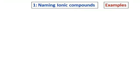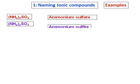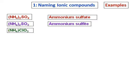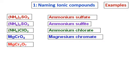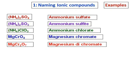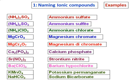Let's do some examples, starting with naming ionic compounds. (NH₄)₂SO₄: NH₄ is called ammonium and SO₄ is sulfate, so it is ammonium sulfate. Similarly, NH₄SO₃ gives ammonium sulfate. NH₄ClO₃: the anion is chlorate, so it is ammonium chlorate. CrO₄ is chromate, giving magnesium chromate. The next one is magnesium dichromate, then calcium phosphate, strontium nitrite, barium hypochlorite, potassium permanganate, and sodium bicarbonate. Notice that nowhere have I used di, tri, etc., because it doesn't apply to ionic compounds.